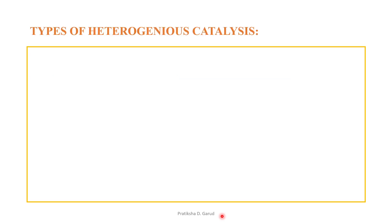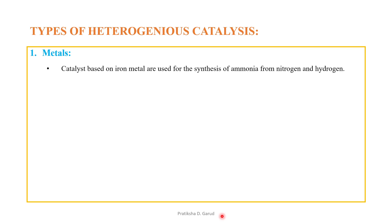There are four types of heterogeneous catalysis. The first type is metals, which act as catalysts. For example, catalysts based on iron metal are used for the synthesis of ammonia from nitrogen and hydrogen: N₂ + H₂ → NH₃.